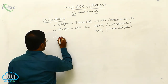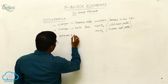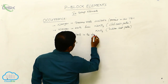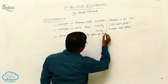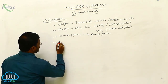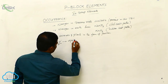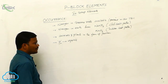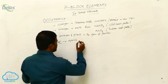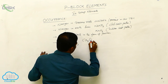Nitrogen also exists in animals and plants in the form of proteins and different organic substances. Phosphorus is available in its apatite form. The calcium phosphate derivatives are rocks called apatites, represented as Ca₉(PO₄)₆·CaX₂.